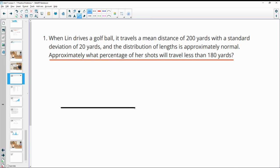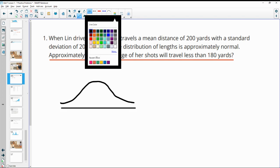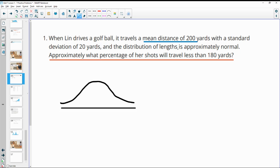So I like to draw a normal distribution curve so that I can label it and think about what's happening. It says that the mean distance is 200, so that's right smack dab in the middle. You have 50% of your data on either side here. So 50% is going to be above 200 and 50% is going to be below 200.